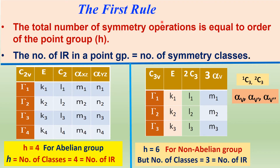According to the first rule, the total number of symmetry operations is equal to the order of the point group. The number of irreducible representations in a point group is equal to the number of symmetry classes.